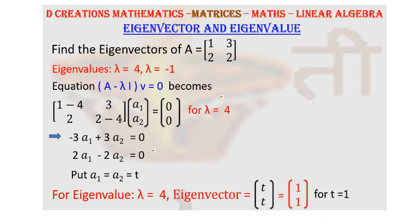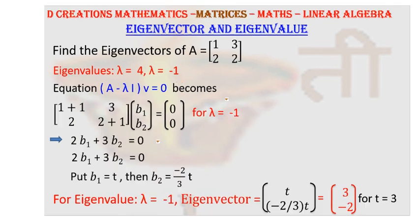So this is the first eigenvector we got for the eigenvalue lambda is equal to 4. Now, let us move on towards the finding out the eigenvector for the eigenvalue lambda is equal to minus 1. The procedure is the same. So you have this equation. Only instead of substituting plus 4 as we did earlier, we have to substitute minus 1. So this will become 1 plus 1. This will become 2 plus 1. And this particular eigenvector we are denoting by the elements b1, b2. So that is the eigenvector.